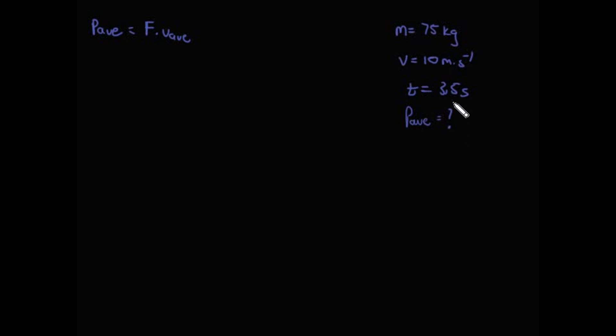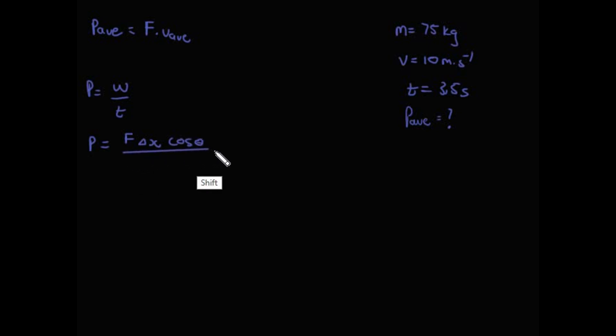The formula for average power is P_average equals force multiplied by average velocity. We don't have force directly. From P equals W over T, we know P equals F times delta x times cos theta over T. Since the force is in the same direction of motion, cos theta equals 1, giving P equals F times delta x over T. But we don't have delta x — all we have is velocity, so we need to calculate force first.